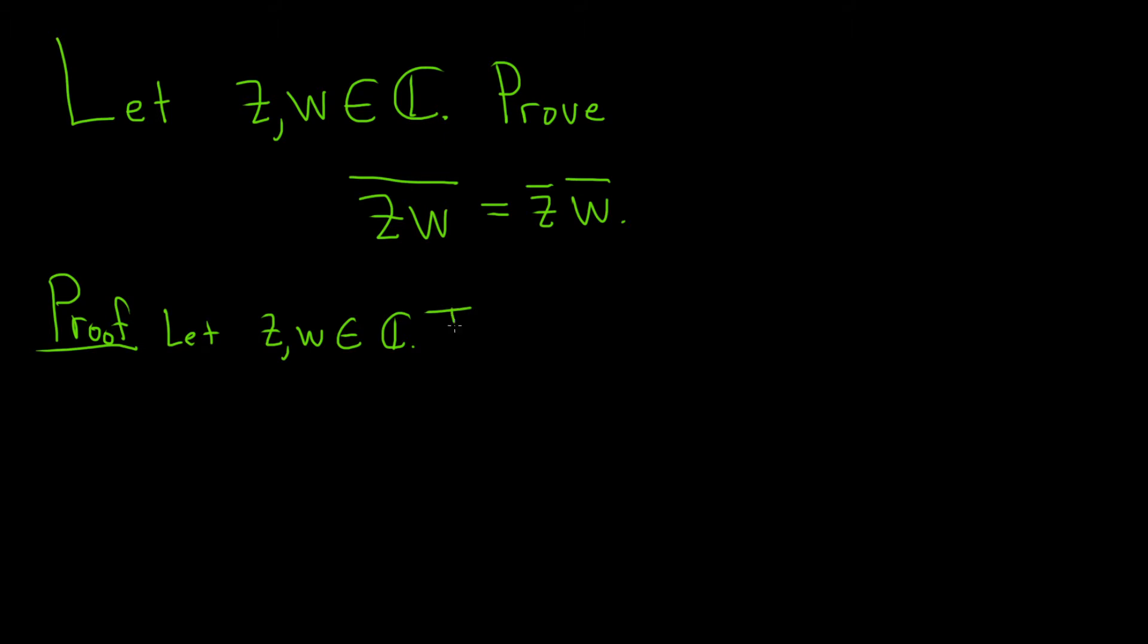So what does this mean? This means that we can write them as follows. z is equal to x1 plus y1i, and w is equal to x2 plus y2i. Okay. So we have our complex numbers, and in this case, our x1, x2, y1, y2 are real numbers. These are going to be real numbers.